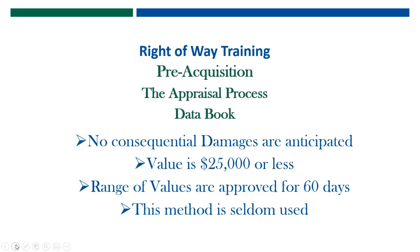The data book has a range of values, which simply means that between those ranges we have to come up with a valuation to offer to the property owner. Those values are also approved for 60 days. I just want to highlight that this method is seldom used today, but it is a tool that we have if we need to use it.